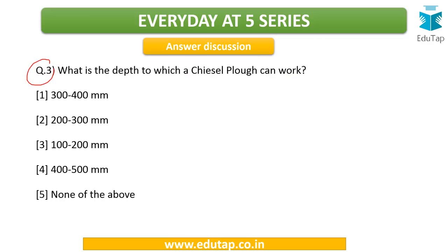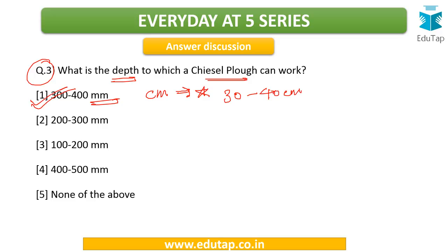The third question was: what is the depth to which a chisel plough can work? The chisel plough is one of the primary tillage implements. Its working depth is 300 to 400 mm, which you can also convert to 30 to 40 centimeters. The option in the exam can be in mm or centimeters, so make a note of both.